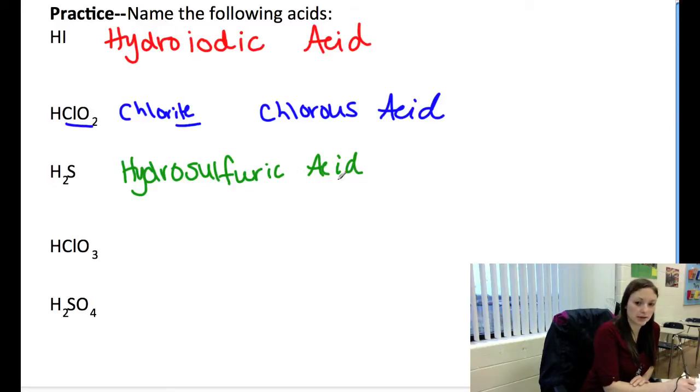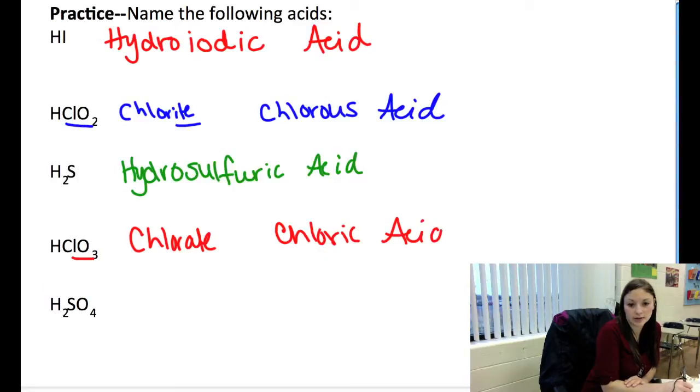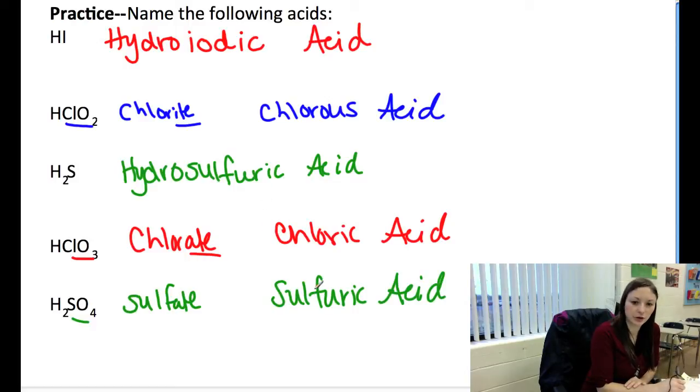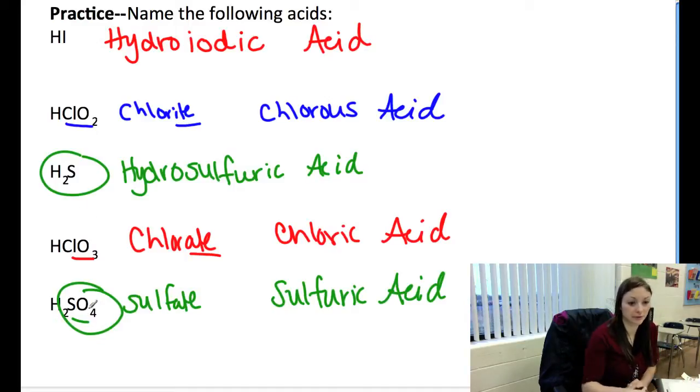HClO3. Well, this is not a binary acid. It has oxygen. It's polyatomic. ClO3 is chlorate. So we go chloric acid. -Ics are from -ate. Now here we see we have H2SO4. SO4 is polyatomic. It has oxygen. It's sulfate. -Ates are -ics. So we go sulfuric acid. Notice how we have hydrosulfuric and sulfuric, two different things. H2S, H2SO4. They're different compounds. They're named differently.